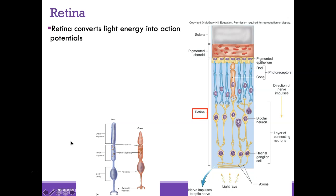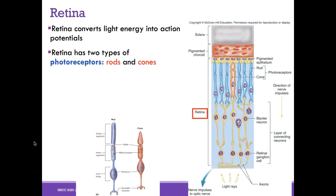This is a good point to pause and make sure you understand the anatomy we've covered so far. The retina is what converts light energy into action potentials. A fun fact: the retina is the only part of the brain you can see without dissection — using an ophthalmoscope you can actually see the retina. The retina has two types of photoreceptors: rods and cones.